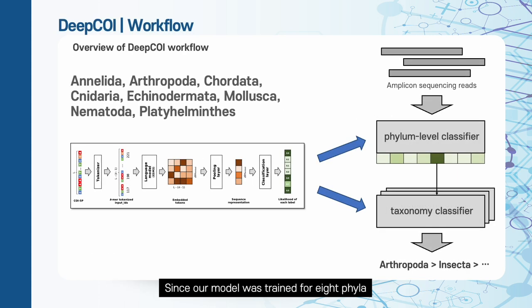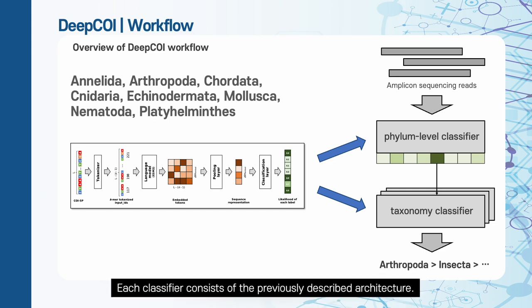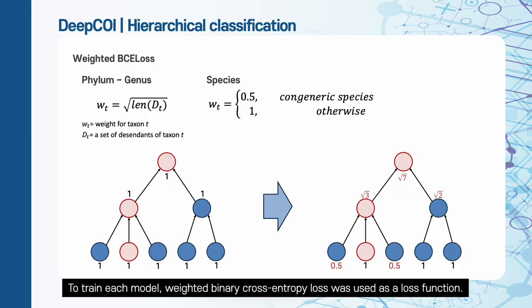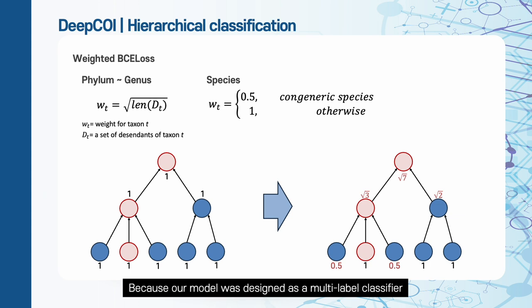Since our model was trained for 8 phyla, the input sequence will be classified at the phyla level first, and then will be passed into an appropriate classifier. Each classifier consists of the previously described architecture. To train each model, weighted binary cross-entropy loss was used as a loss function. Because our model was designed as a multi-label classifier, likelihoods for every class at every rank are predicted simultaneously.